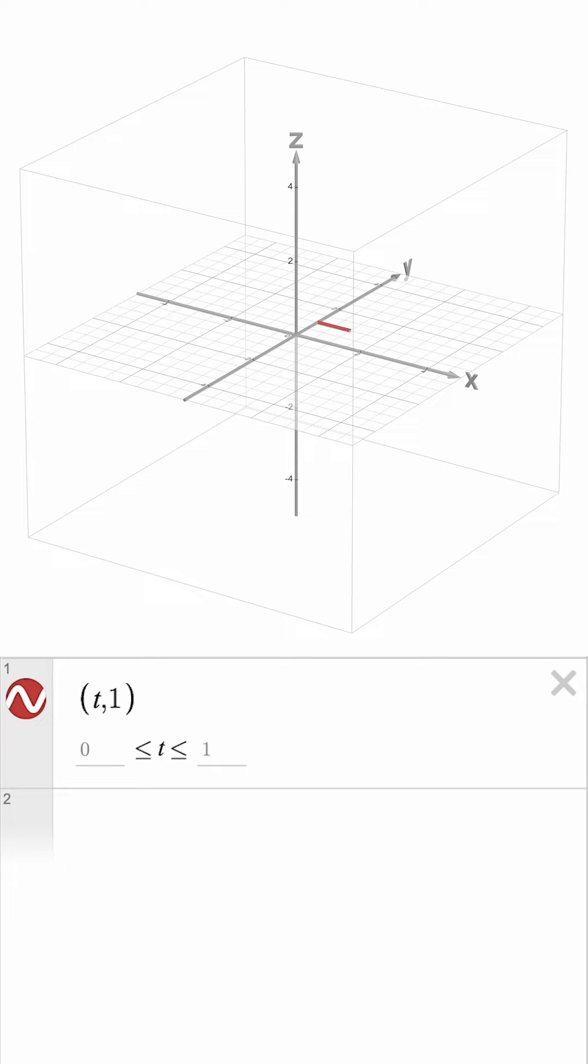You can adjust these bounds by clicking, allowing you to visualize how this curve behaves across different intervals of t, such as from negative 2 to 2.